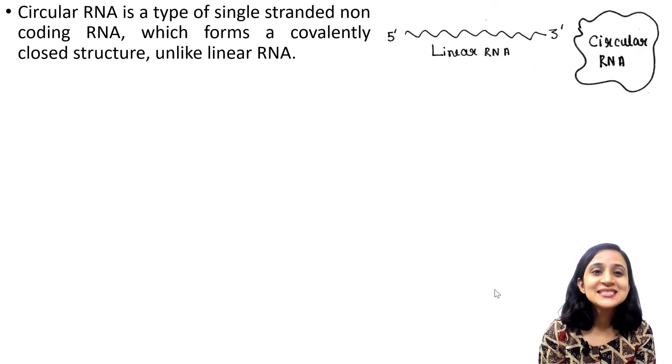Circular RNA is a type of single-stranded non-coding RNA. It is single-stranded and non-coding RNA. It does not code for any proteins which forms a covalently closed structure, unlike linear RNA.